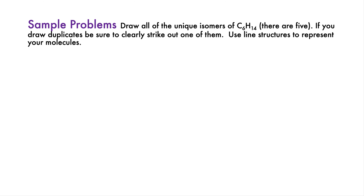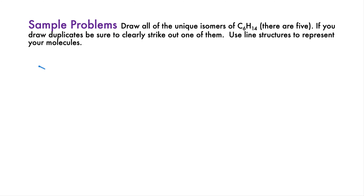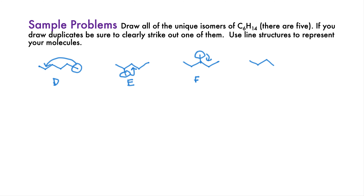Pause and try this sample problem. Draw all of the unique isomers of C6H14. There are five of them. If you draw any duplicates, be sure to clearly cross out one of them. Use line structures to represent your molecules. We start by drawing the long-chain isomer, which we'll call D. Remove a CH3 and put it on the second carbon to get E. Move it one more carbon down to get F. If you move it one more carbon down, you get E again, except drawn in reverse order.